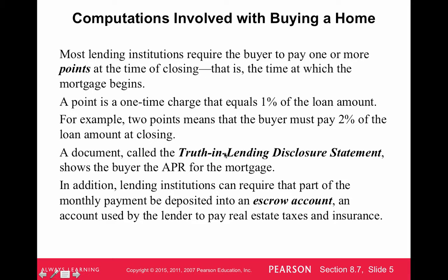A document called the Truth in Lending Disclosure Statement shows the buyer the APR for the mortgage. In addition, lending institutions can require that part of the monthly payment be deposited into an escrow account — an account used by the lender to pay real estate taxes and insurance. With my current mortgage, I compute my monthly payment using the formula, but I also pay additional money into escrow for insurance and real estate taxes.